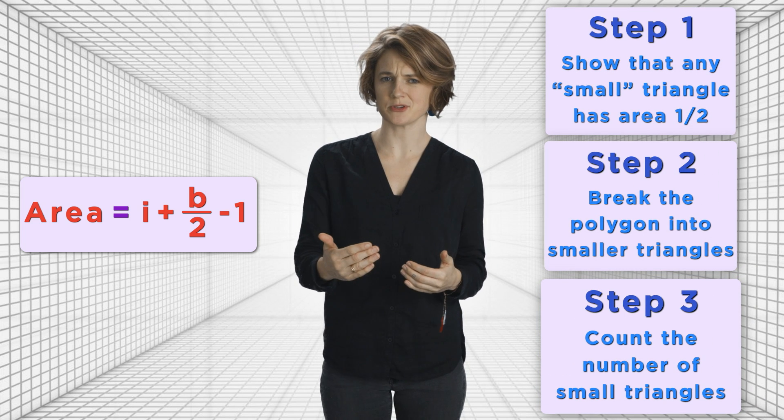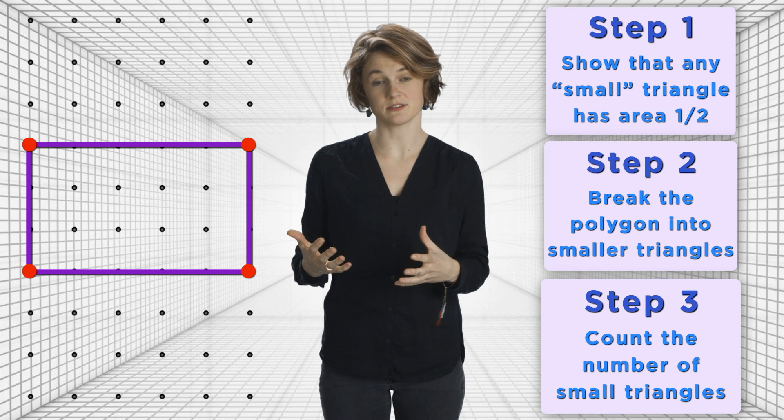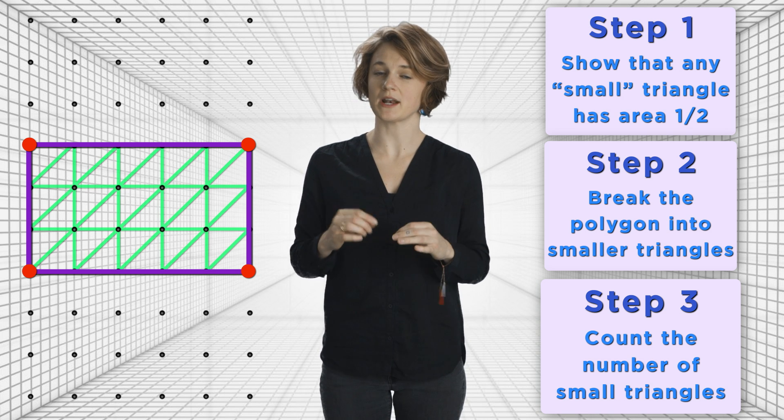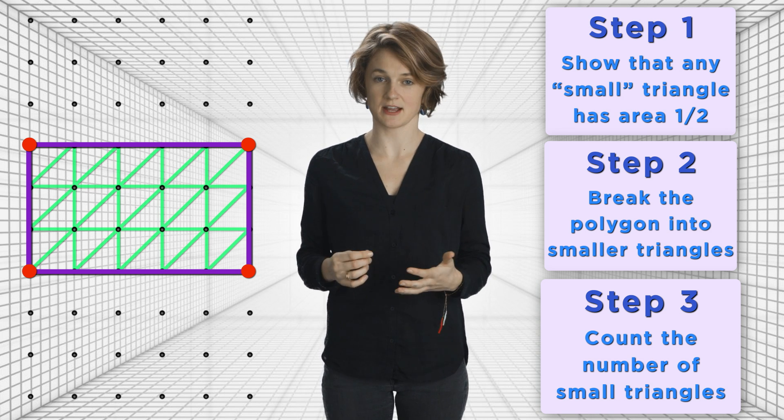So, for example, since we could break our rectangle into 30 small triangles, and each has area 1 half, the rectangle has area 15.